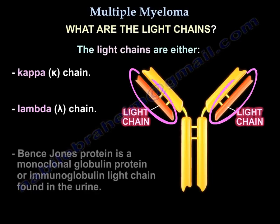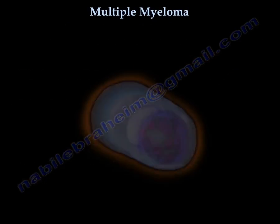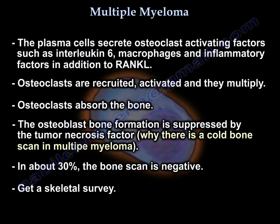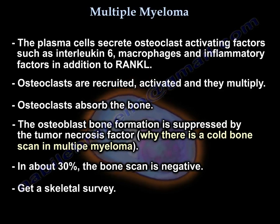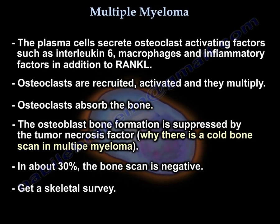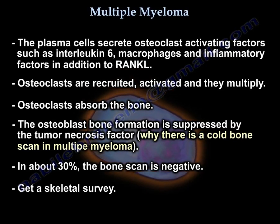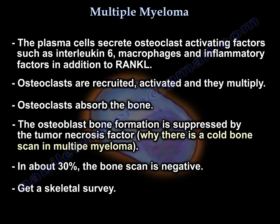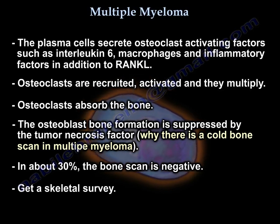Bence-Jones proteins are light chains released into the urine. The plasma cells secrete osteoclast-activating factors such as interleukin-6, macrophages, and inflammatory factors in addition to RANK-L. Osteoclasts are recruited, activated, and they multiply and absorb bone. Osteoblast bone formation is suppressed by tumor necrosis factor, which is why the bone scan is cold in multiple myeloma.